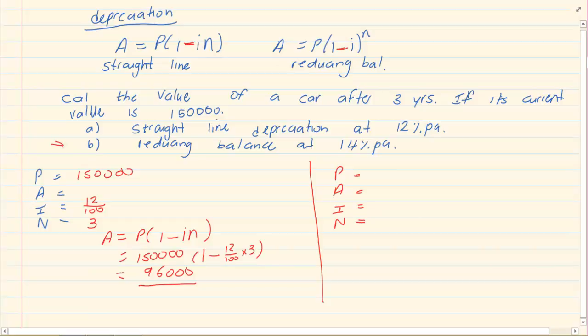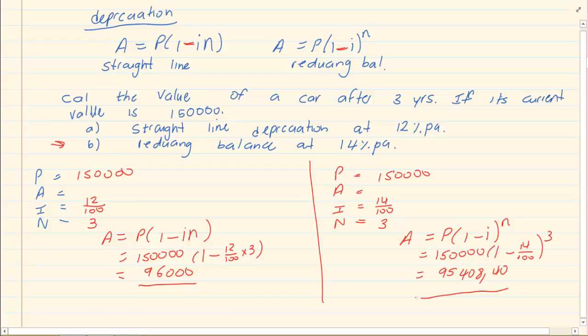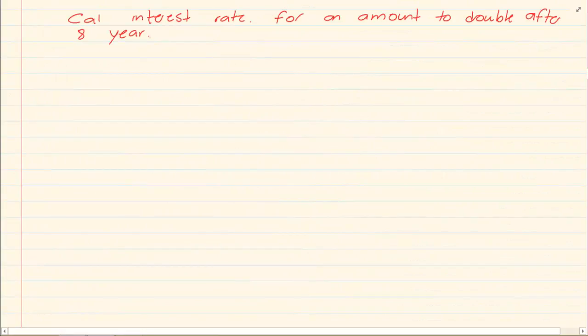Let's do B, the reducing balance. Our P is 150,000. Our I is 14% and our N is still 3 years. The formula is A is equal to P open brackets (1 minus I) to the power of N. So we have 150,000 open brackets (1 minus 14 over 100) to the power of 3, which gives us an amount of 95,408 Rand and 40 cents.